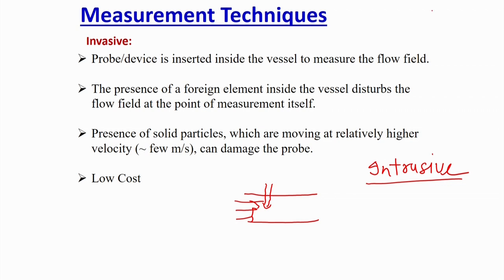Whether it is invasive or intrusive, you have to intrude something inside. The major drawback is that if you are inserting something inside, a boundary layer will start developing around the probe, meaning the flow will get disturbed at the point of measurement itself. You are measuring things but you are also modifying the flow field, and since velocity, volume fraction, and solid distribution are all interdependent, if you change one, another is bound to change.